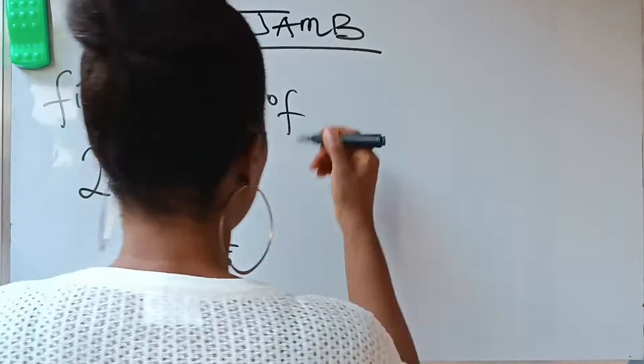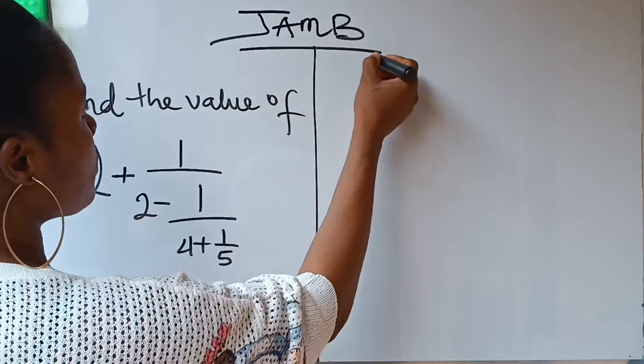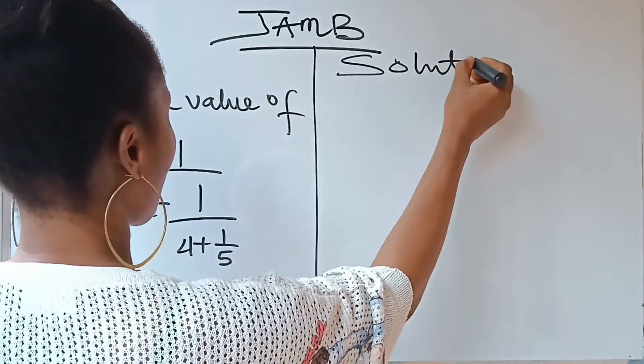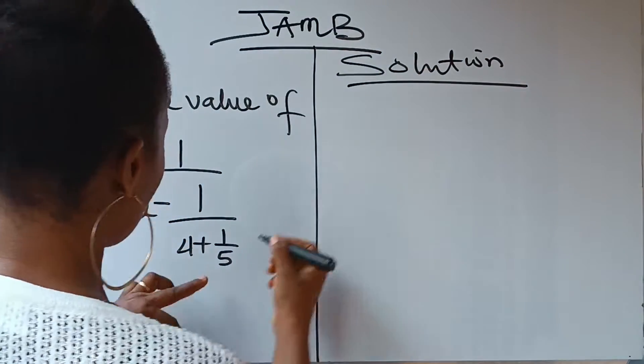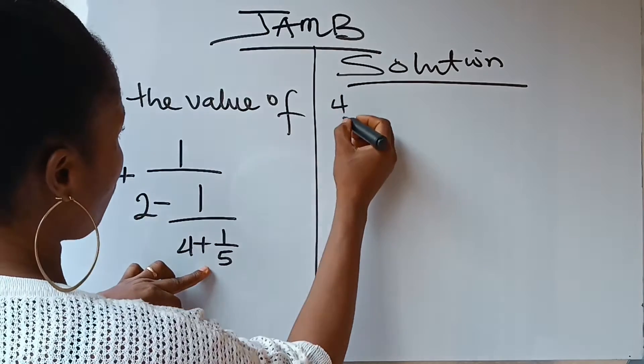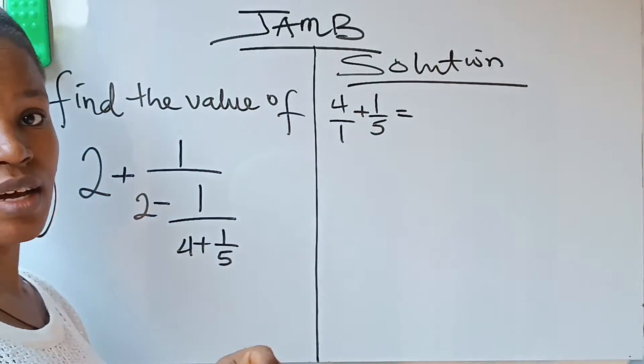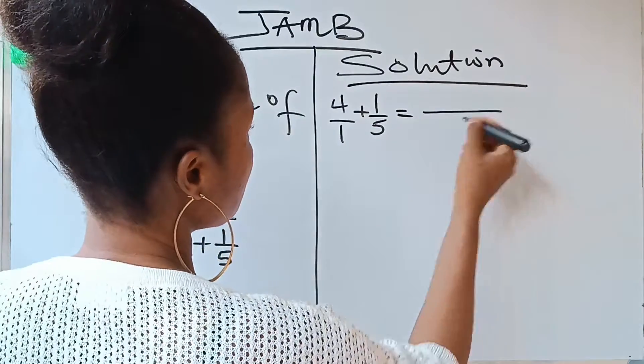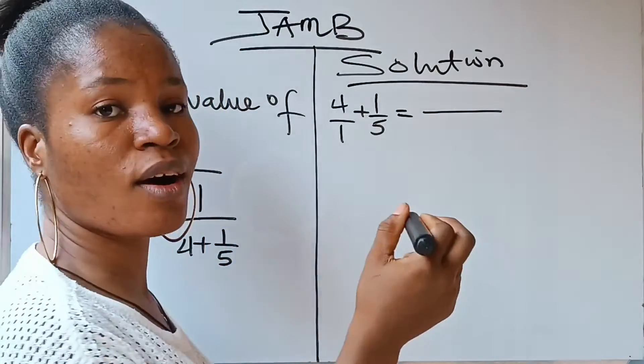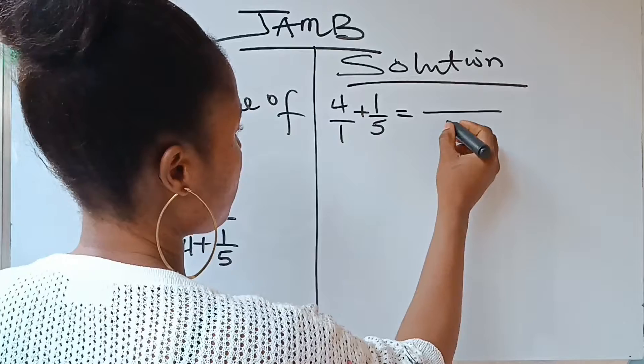So we are going to write it like this: Solution. We are going to solve the denominator 4 over 1 plus 1 over 5. 4 is the same as 4 over 1. Now we are going to take the LCM. What is the LCM of 1 and 5? It's 5.